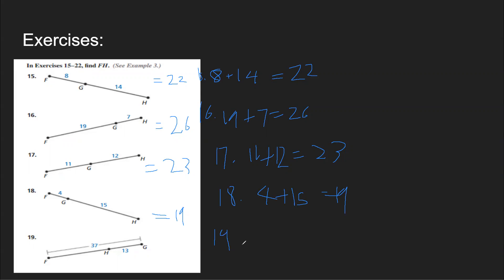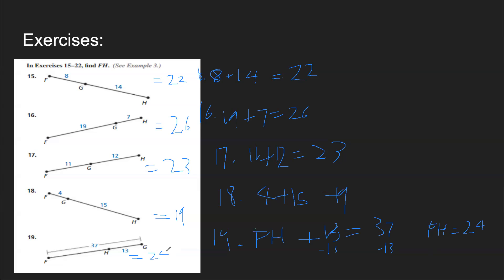For number 19: FG is made up of FH plus 13. So FH plus 13 equals 37. If you subtract 13 on both sides, you get FH is equal to 24.